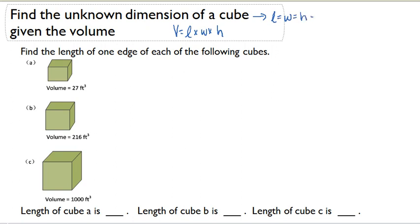Because the three of these are equal, I'm just going to call all three of them S. S is going to stand for the side length of the cube. So I'm going to rewrite this formula to be S cubed. V equals S cubed.